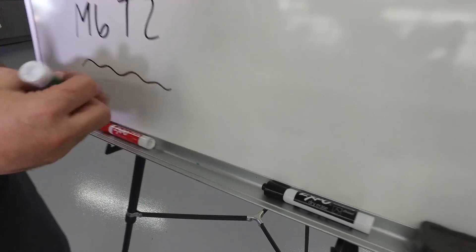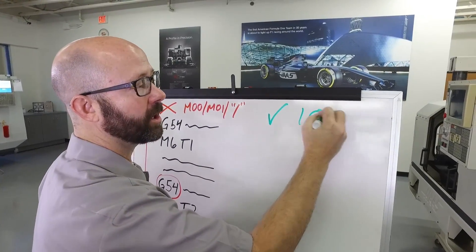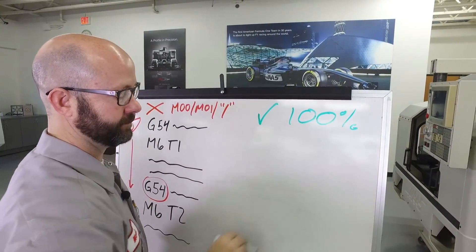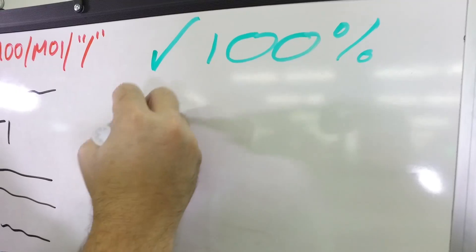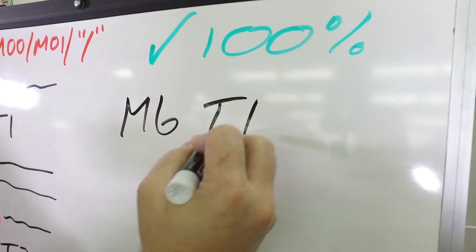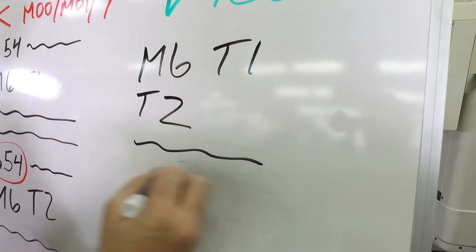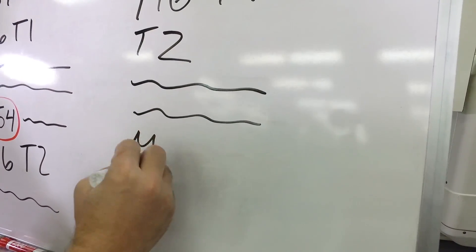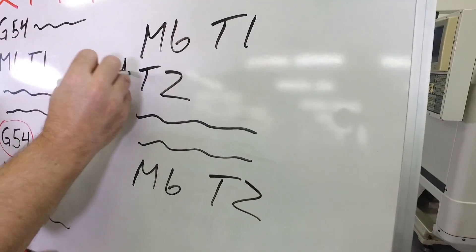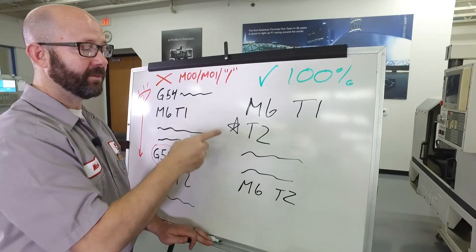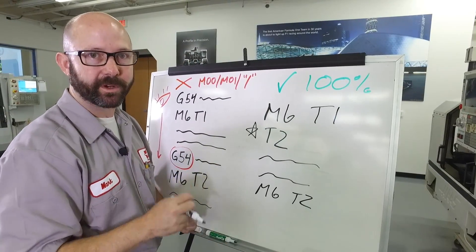Here's our solution. We're gonna use some good code that's gonna work 100% of the time. After we've called up our tool one with an M6 T1, we're gonna immediately call a T2. This is gonna pre-stage the next tool coming up in my program. So by the time we get to tool two in my program, the carousel already has that tool ready for the fast changeover.